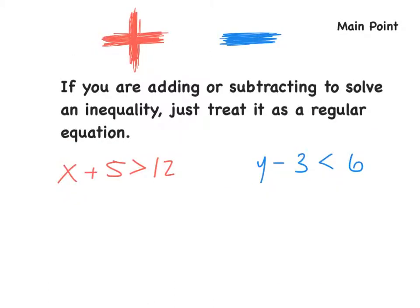So here's the main point. If we are adding or subtracting to solve an inequality, just treat this just like a regular equation. Remember if it's just x plus 5 is equal to 12, what's the one thing that we're supposed to do? Always add the opposite. So what's the opposite of plus 5? Opposite of that is minus 5. So subtract 5 to both sides, and x is greater than, and 12 minus 5 is equal to 7.